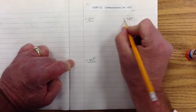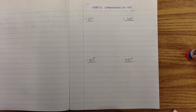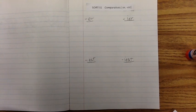Okay, let's take a moment and talk about ER versus EST. Okay, when we're comparing two things, we're going to use ER and IER. When we're dealing with three or more things that we're comparing, we're going to use EST or IEST.